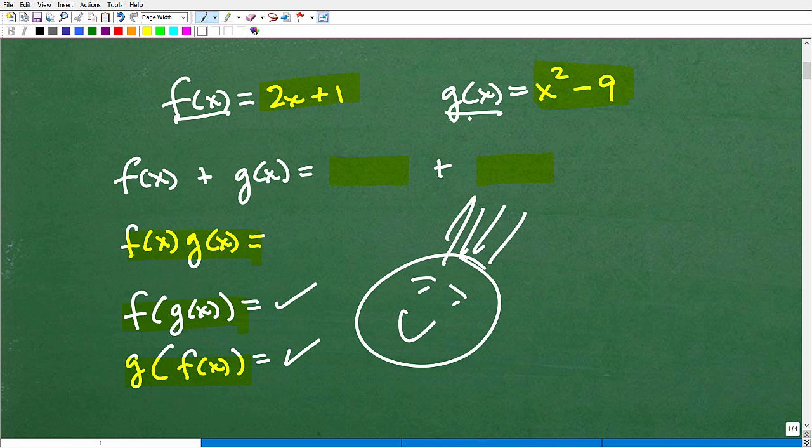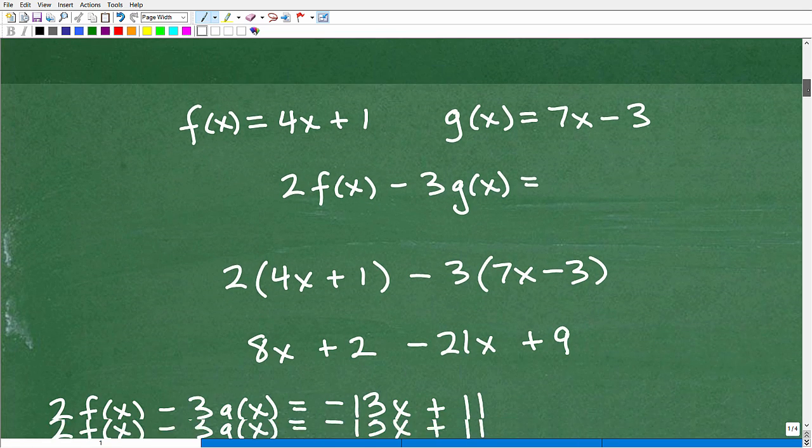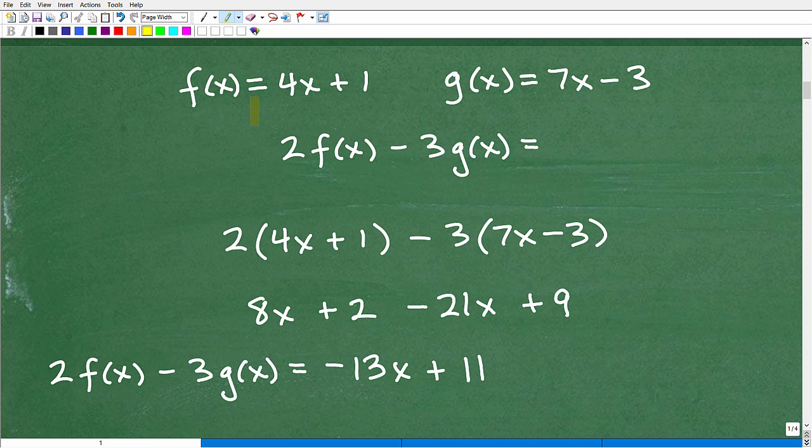So again, we're dealing with function operations. We can manipulate functions in any kind of manner. So let's take a look at the problem here and see how we would approach it. Okay. So here we have f of x is equal to 4x plus 1 and g of x is equal to 7x minus 3. Now, what I'm stating here is that the function is equal to this. Okay. So if I write this, it means f of x and f of x means this. So they're equivalent. Okay. So if you see a f of x, I could replace it with a 4x plus 1.